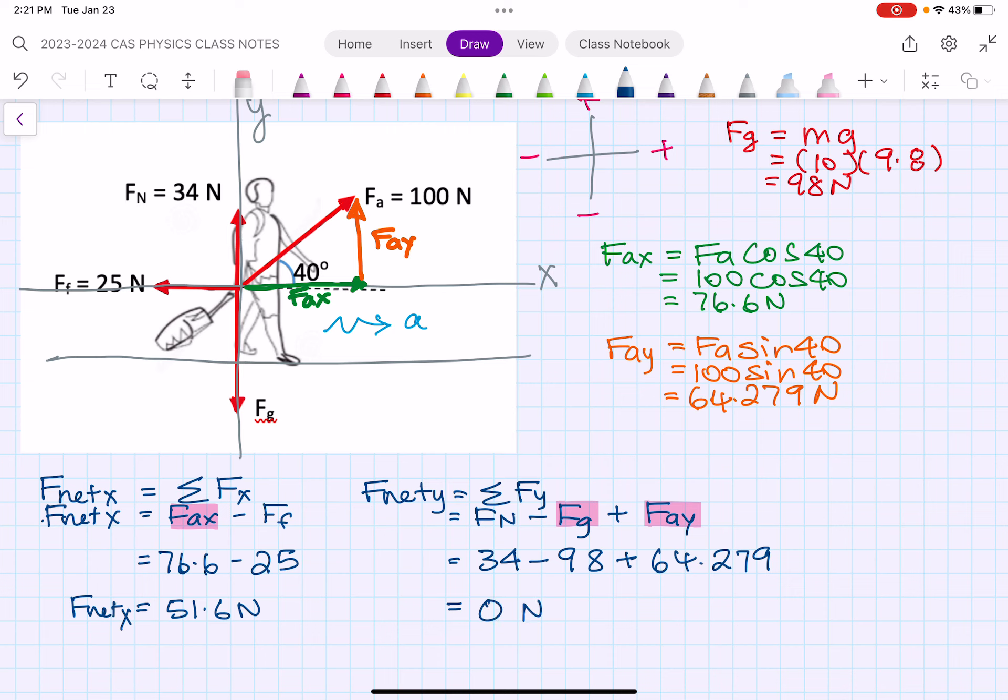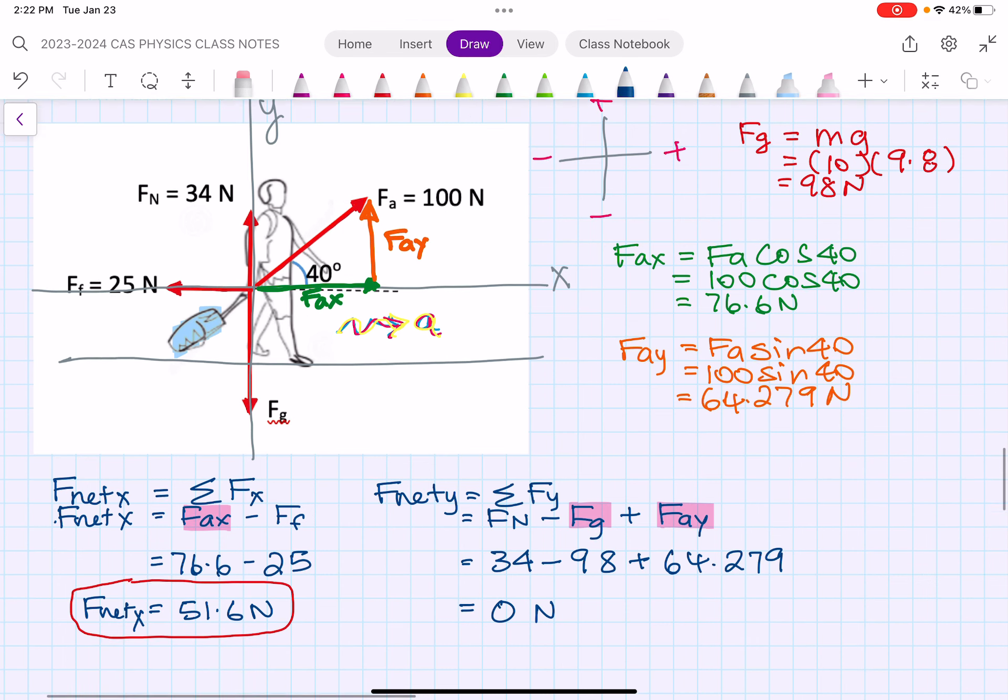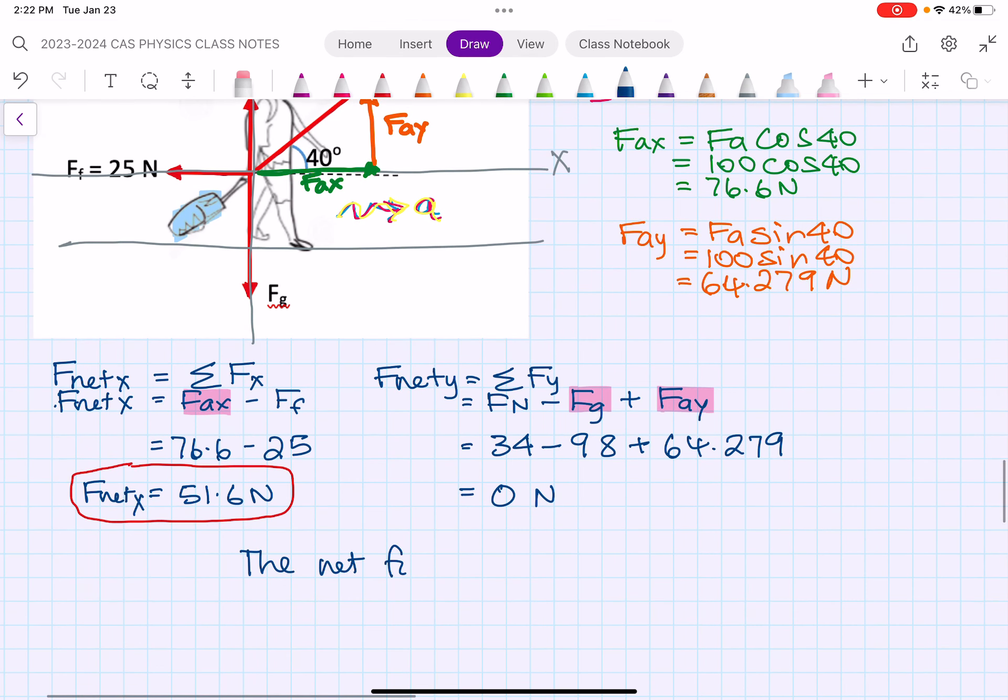So there is no acceleration in the vertical. That makes sense, right? Because this roller bag isn't getting lifted off the ground or falling through the ground - it's just moving along horizontally in the x direction. And so now we can say that, yes, in fact this acceleration I drew in here is accurate because it's got a net force in that direction. This is the net force in that direction, and then it's going to accelerate in that direction. Okay, so my final answer is the net force is 51 newtons. That's all I need to say - the net force is 51, or 50, you can even say 52, you can say 51.6 newtons. That's it.